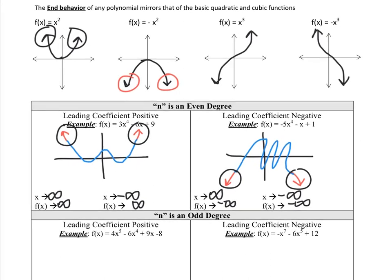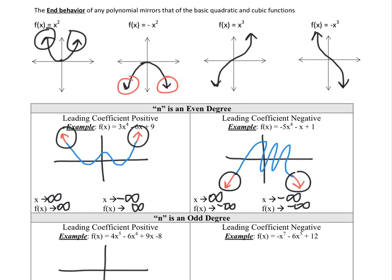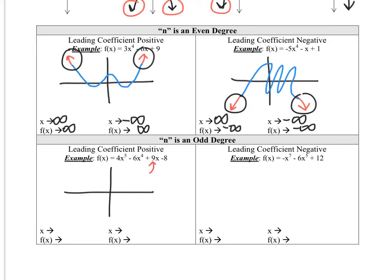Now let's look at the third example. If n is an odd degree and the leading coefficient is positive — here I have a positive 4 — this one is going to mirror the basic positive cubic, x to the third. So my end behavior goes down on the left and up on the right. As x goes to infinity, y shoots up to infinity. As x approaches negative infinity, y goes down to negative infinity.